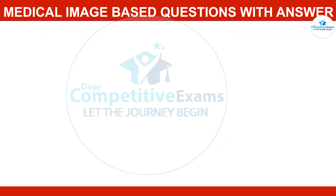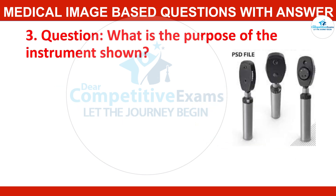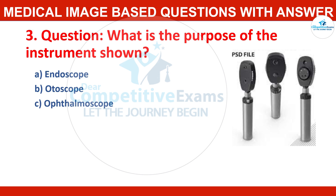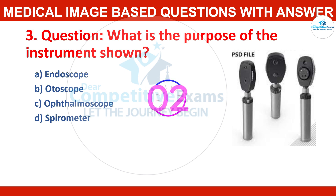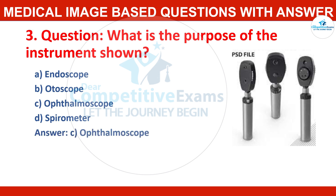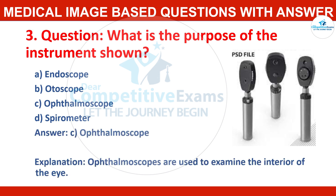Question number three: what is the purpose of the instrument shown below? Options are endoscope, otoscope, ophthalmoscope, or spirometer. The correct answer is ophthalmoscope. Ophthalmoscopes are used to examine the interior of the eye.